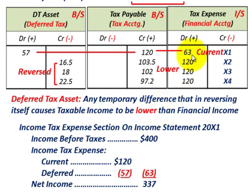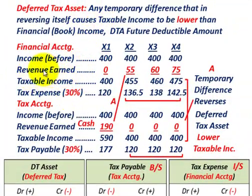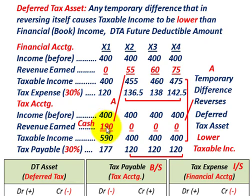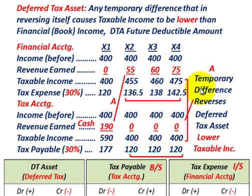Now let's look at a deferred tax asset in terms of a revenue item. Again, we compare financial accounting versus tax accounting. For tax accounting purposes, revenue is recognized when received in cash — so $190,000 is recognized in year X1, and nothing in the next three years. For financial accounting, revenue is recognized when earned or accrued, so nothing in the first year but amounts are recognized in years X2 through X4.